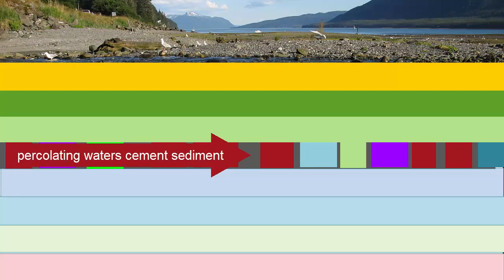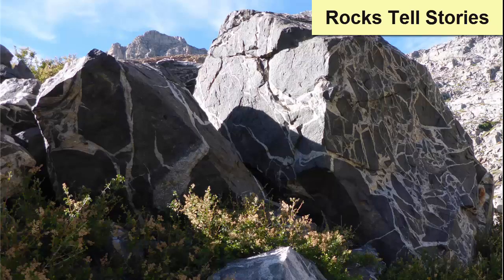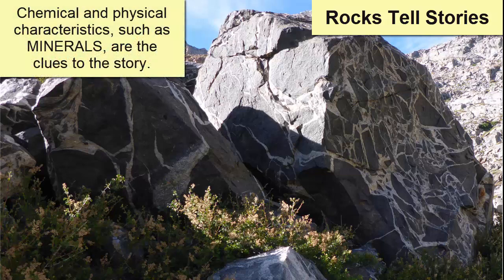Over time, the lava flow will break down, weather, and small pieces will collect in low-lying areas such as riverbeds. And after being buried by other sediment, percolating waters can cement the grains together to create a new sedimentary rock. When we later find this rock on Earth's surface, we use chemical and physical clues in the rock to peer into its complex history. One of the most important clues we'll look for are the minerals and the textures within the rock. To start the journey of reading the stories of rocks, we have to start with learning how to identify minerals and what they tell us about a rock.